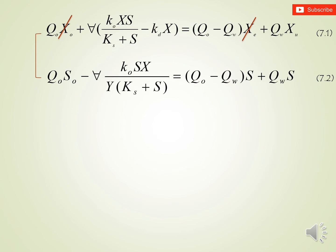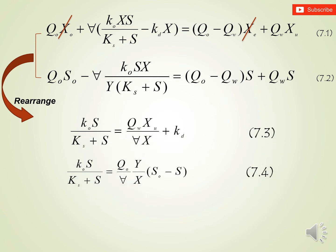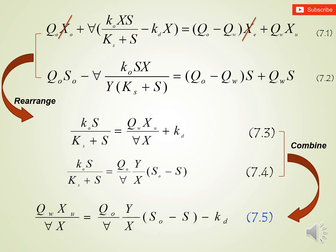Taking these assumptions into consideration, equations 7.1 and 7.2 will be modified. In equation 7.1, the terms containing X₀ and X_E will be omitted, and equation 7.2 will be rearranged. So 7.1 and 7.2 are changed to 7.3 and 7.4 respectively. Combining 7.3 and 7.4 — since they share similar parameters — generates equation 7.5, which is one of the most important equations in the design of the activated sludge system.